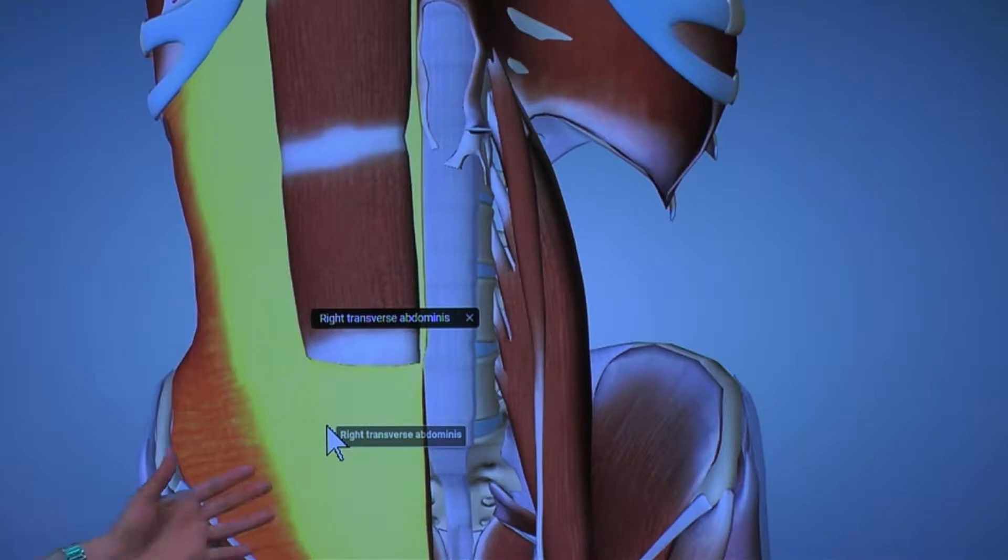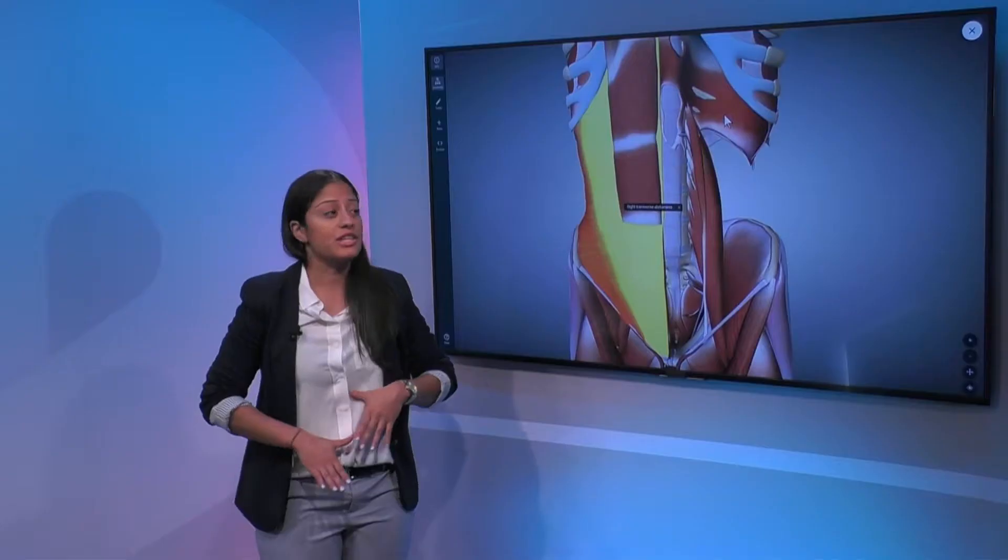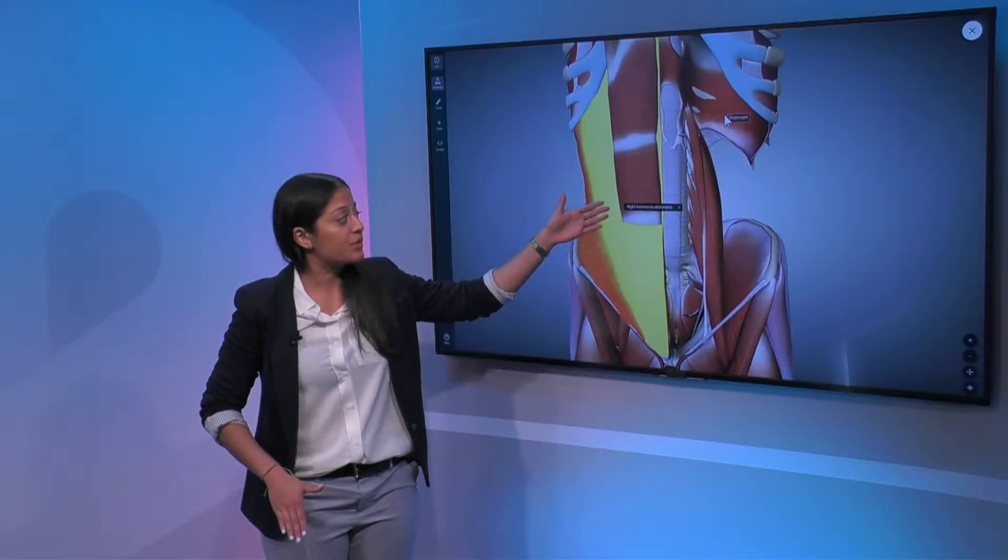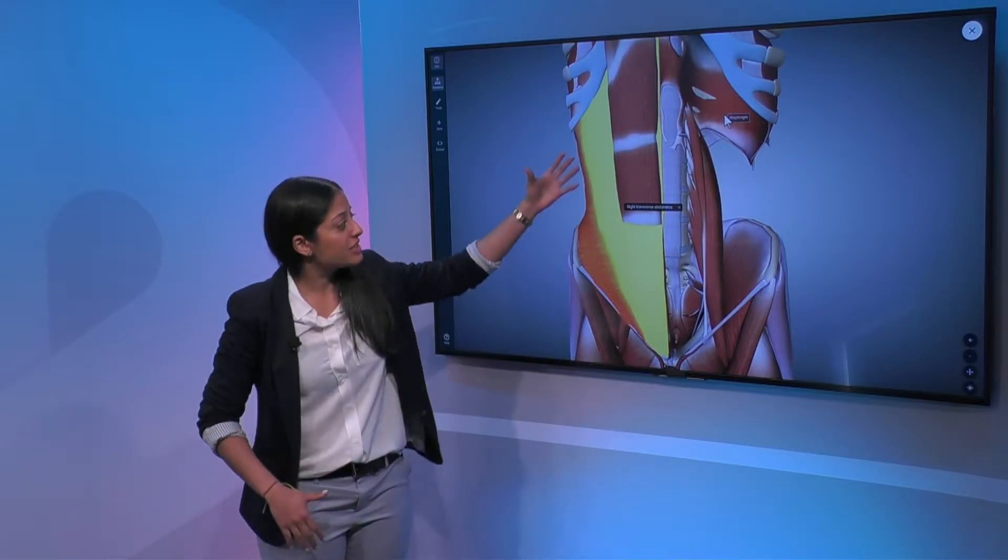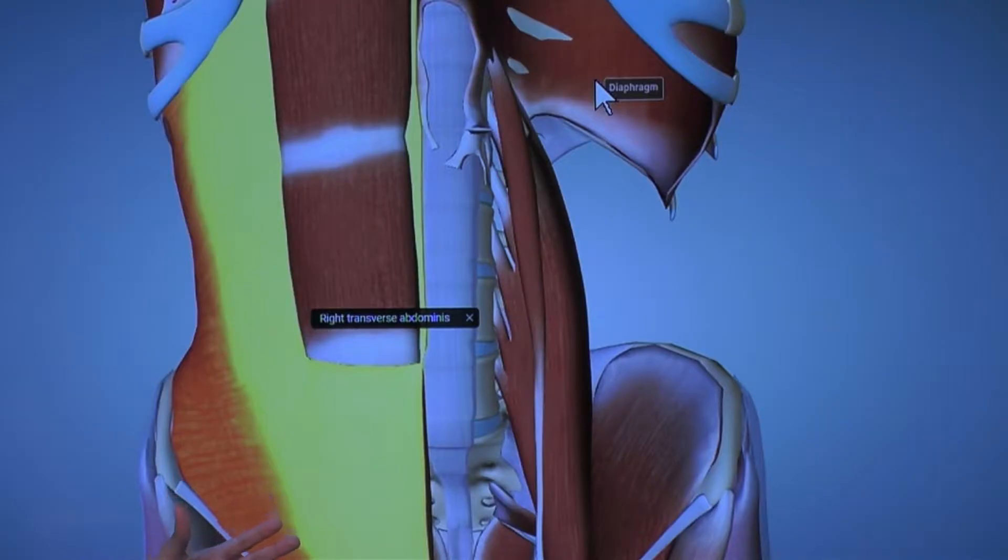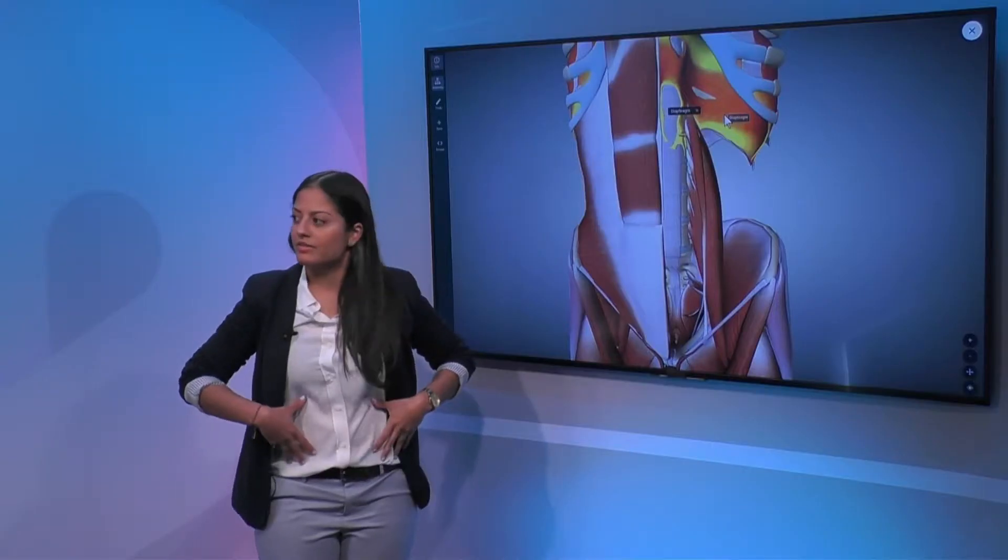We also have our transverse abdominis which is underneath that rectus abdominis and you see it spans along the whole entire front of the trunk and that's a stabilizing muscle for the front of the abdomen.